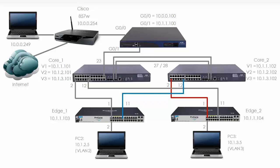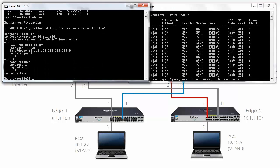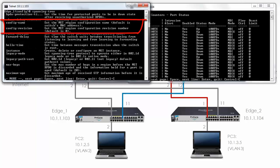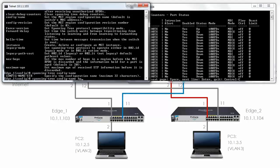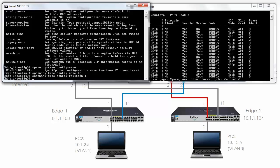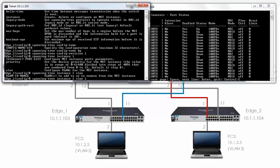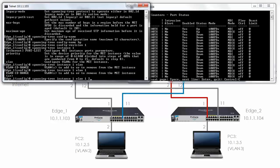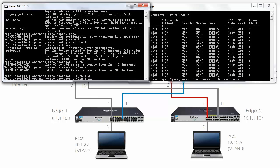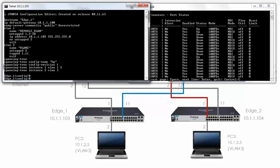The last step is to configure Multiple Spanning Tree on the two ProCurve switches. On Edge 1, 'show run' shows basic spanning tree enabled. Now we type 'spanning tree' and notice the options: 'config name' and 'config revision'. Config name is set to 'hp', config revision is set to 1. Spanning tree instance 1 has VLANs 1 and 2 mapped to it. Spanning tree instance 2 has VLAN 3 mapped to it. 'Show run' confirms the spanning tree configuration.